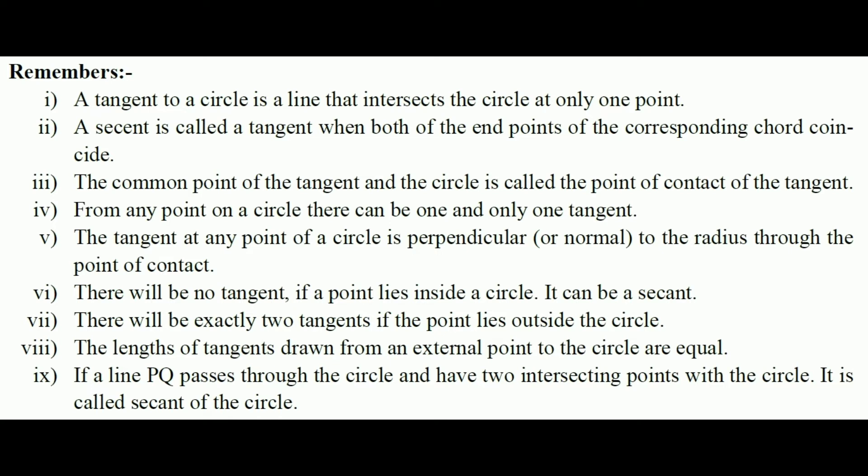Point 1: A tangent to a circle is a line that intersects the circle at only one point. The tangent line will not touch the circle more or less than one point.